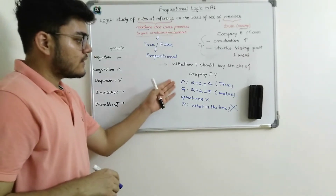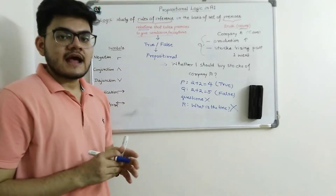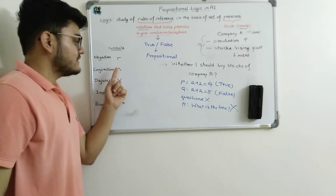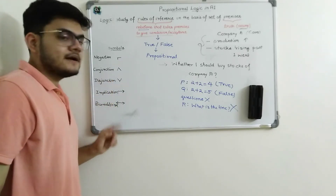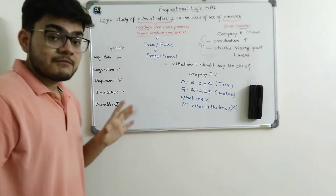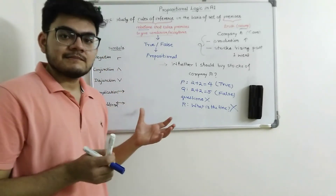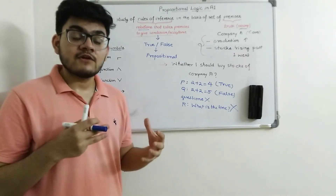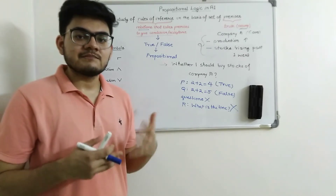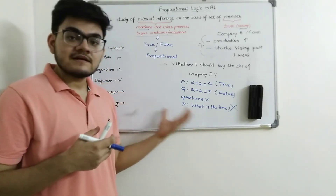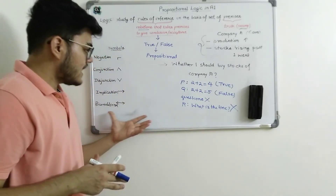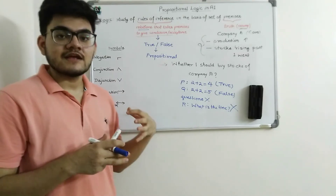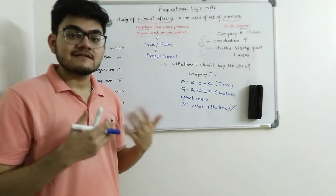One important thing: all propositional logic has five important symbols. These five symbols are: negation, conjunction, disjunction, implication, and biconditional. Using these symbols, we can combine multiple statements and, using the properties of these operators, we can actually derive a logic. So given some statements P, Q, R, S, we can apply these operators and using propositional logic determine whether something is true or false.